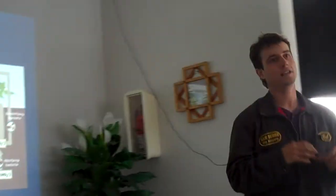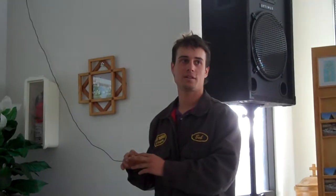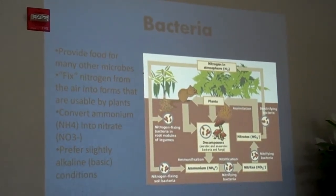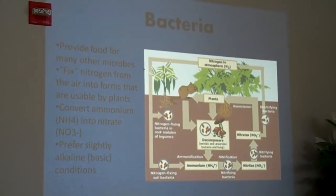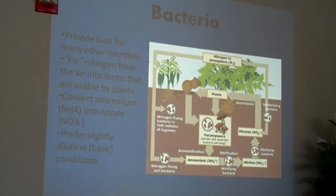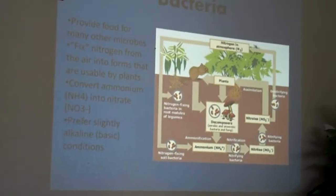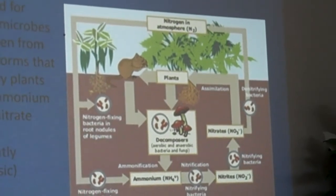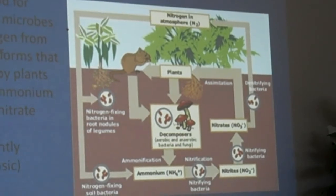The other thing that bacteria do is convert ammonium into nitrate. So if you have a lot of bacteria in your soil, they're going to be converting ammonium — which is the type of nitrogen favored by most trees and perennial crops — into nitrate, which is preferred by your vegetable crops. Most bacteria prefer a slightly alkaline environment. They produce bacterial slimes that help with soil retention, retain nutrients, create spaces for water to be held and absorbed, and they create a slightly alkaline soil.